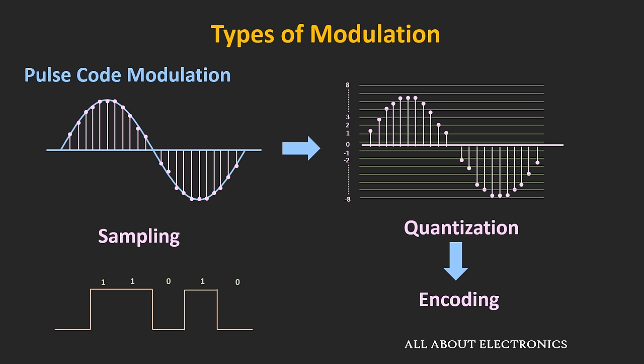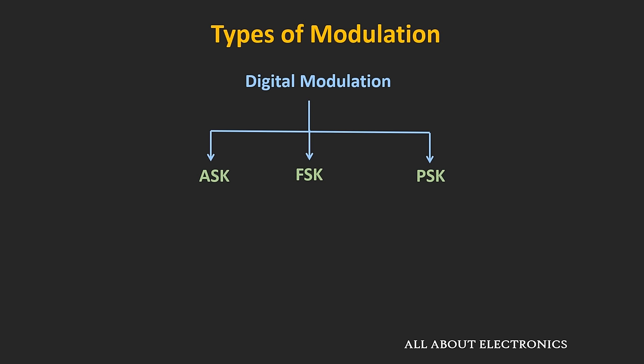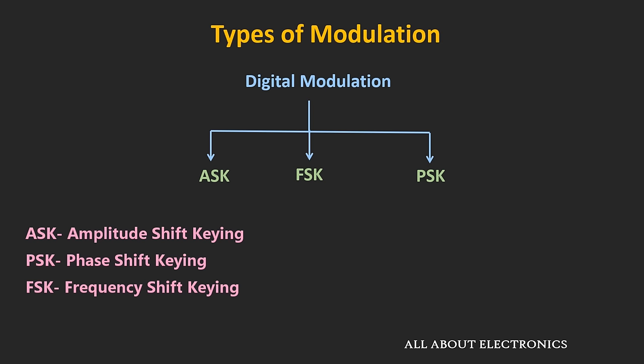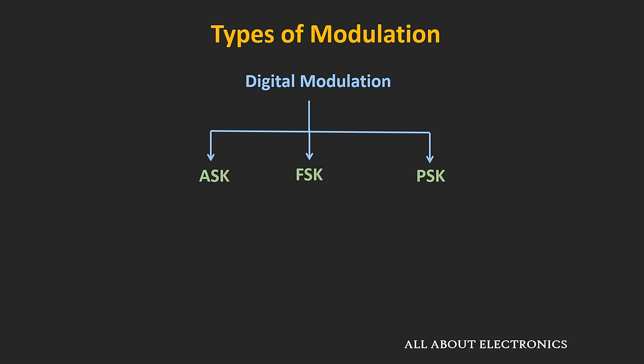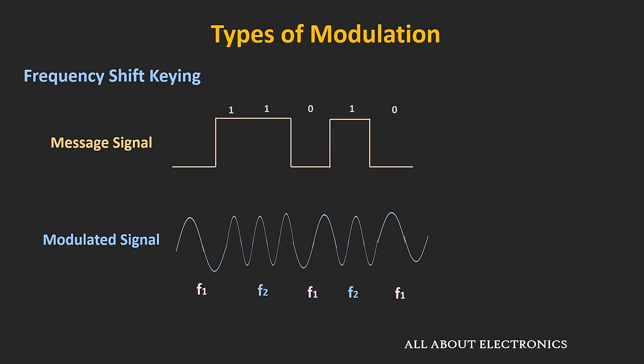So far we have seen different types of analog modulation techniques, where the message signal was analog in nature. Now let's briefly talk about some digital modulation techniques. Broadly, there are mainly three: amplitude shift keying, phase shift keying, and frequency shift keying. In amplitude shift keying — a form of digital amplitude modulation — the amplitude of the modulated signal changes according to the digital bit stream. The binary 1 is represented by a fixed amplitude of the carrier wave, while binary 0 is represented by zero amplitude. In frequency shift keying, the frequency of the modulated signal changes according to the digital bit stream; binary 1 is represented by one frequency, while binary 0 is represented by a different frequency.